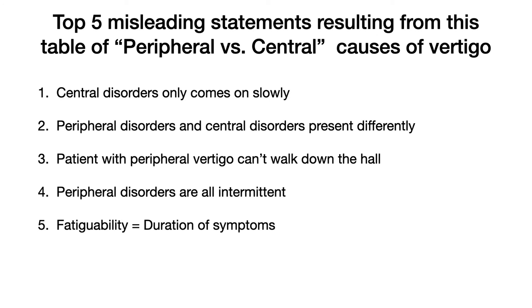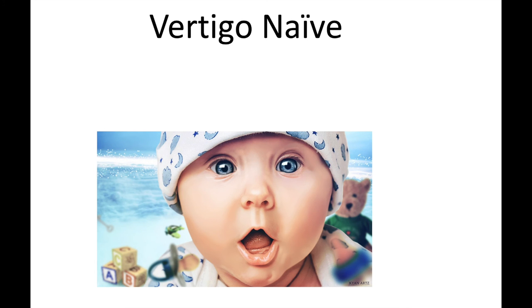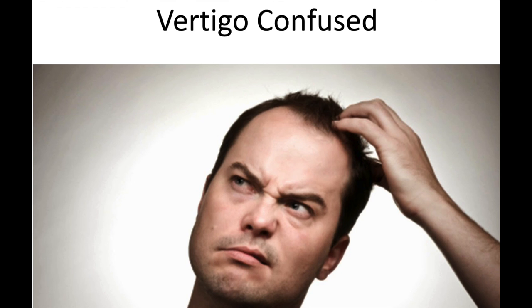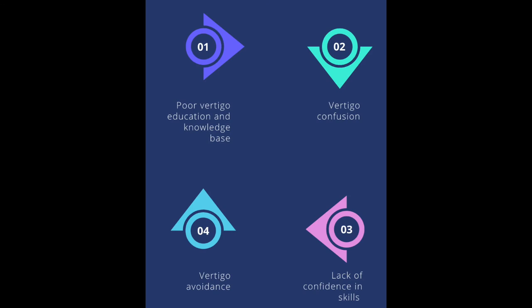Rather than guide the vertigo learner to the correct diagnosis, this table of peripheral versus central vertigo will in fact confuse them — taking them from vertigo novices to vertigo confused, and then to the vertigo disengaged, where they can stay throughout their career in the vertigo vicious cycle of vexation. Instead, watch my videos — especially the Big Three of Vertigo — and if you apply yourself and try to understand this sometimes difficult topic, you too can become vertigo competent. Thanks for watching.